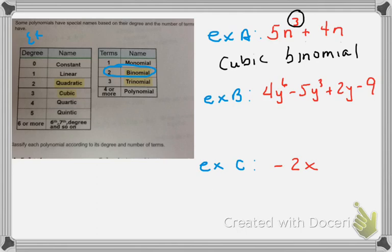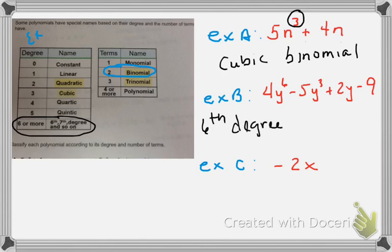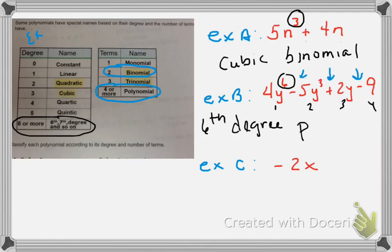For example B, the highest exponent or degree is 6. When the degree is 6 or more, we name it by its degree — it's called 6th degree. Counting the terms separated by pluses and minuses, there are four terms. Four terms is called a polynomial, so this is a 6th degree polynomial.